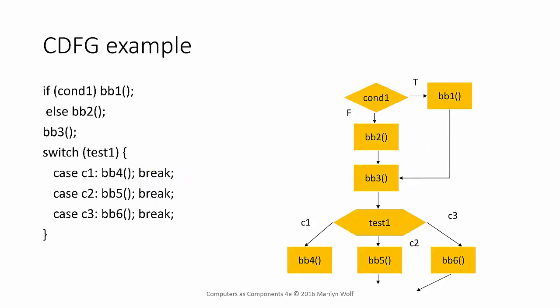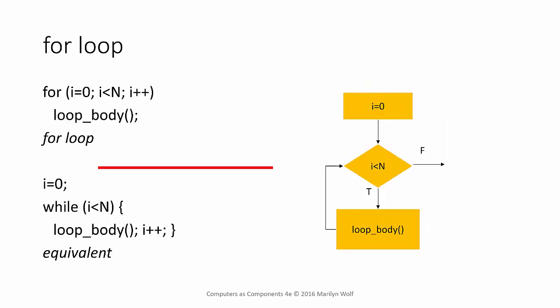Here's a control data flow graph for a simple block of code. We have a condition: if the condition is true, we take BB1; otherwise we take BB2. We always execute BB3. Then we go to the switch statement, evaluate the test, and take one of those cases. A for loop in C is defined to be equivalent to a while loop — the loop initialization becomes a block before the while loop itself. So we can represent a for loop in C using this control data flow graph structure.